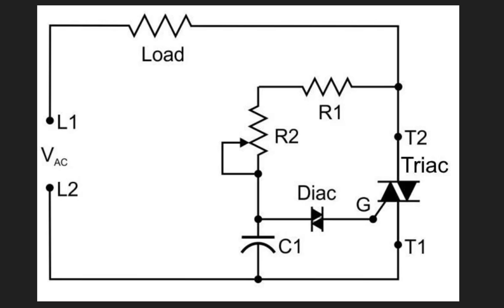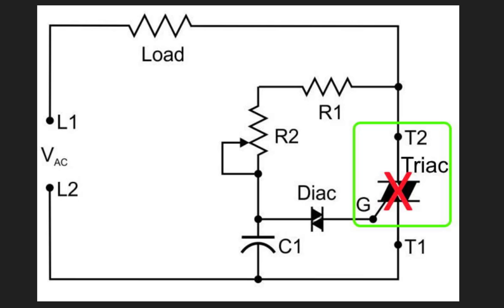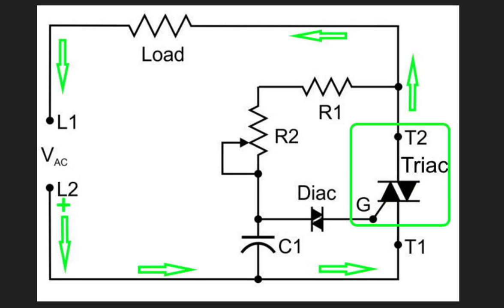The triac then conducts for the remainder of the half cycle. When the AC voltage passes through zero, the triac turns off or stops conducting. Sometime into the next half cycle, which would flow in the opposite direction, the voltage on C1 reaches its breakover voltage in the opposite polarity.